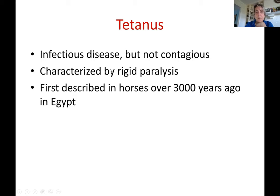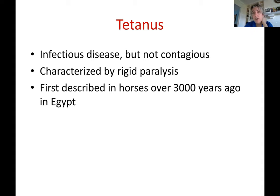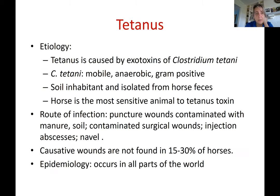Tetanus is characterized by rigid paralysis — the paralysis is hard and stiff. It is a very old disease, characterized in Egypt over 3,000 years ago. The causative agent, Clostridium tetani, is a motile, anaerobic, gram-positive bacteria. It is an inhabitant of soils everywhere.